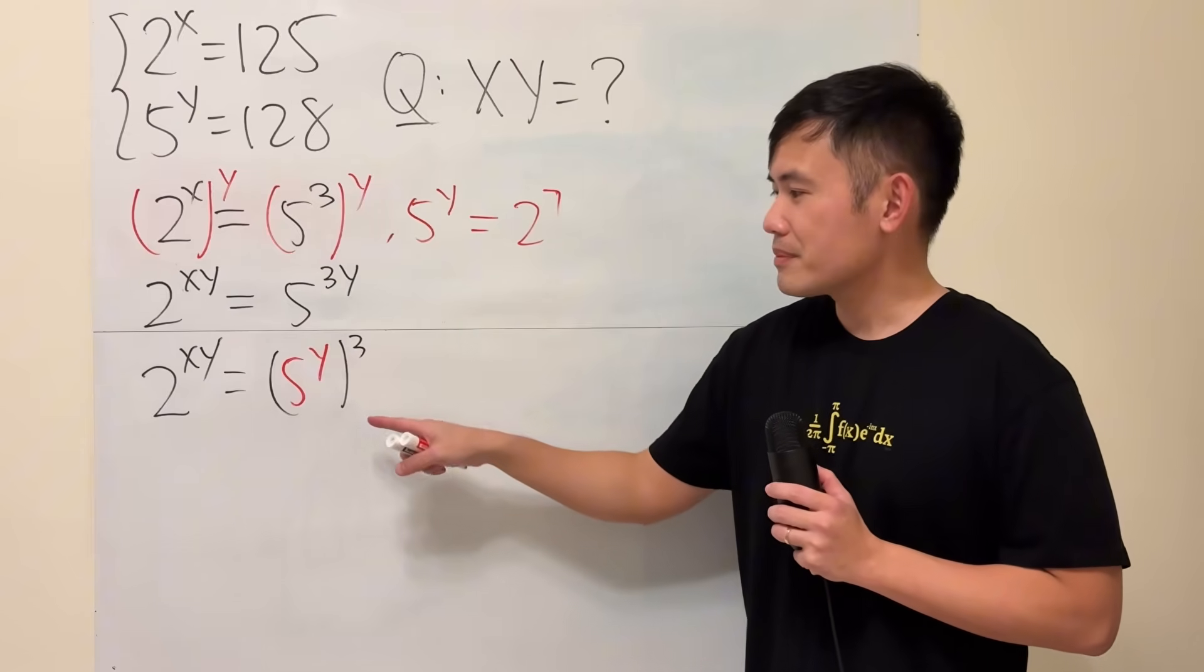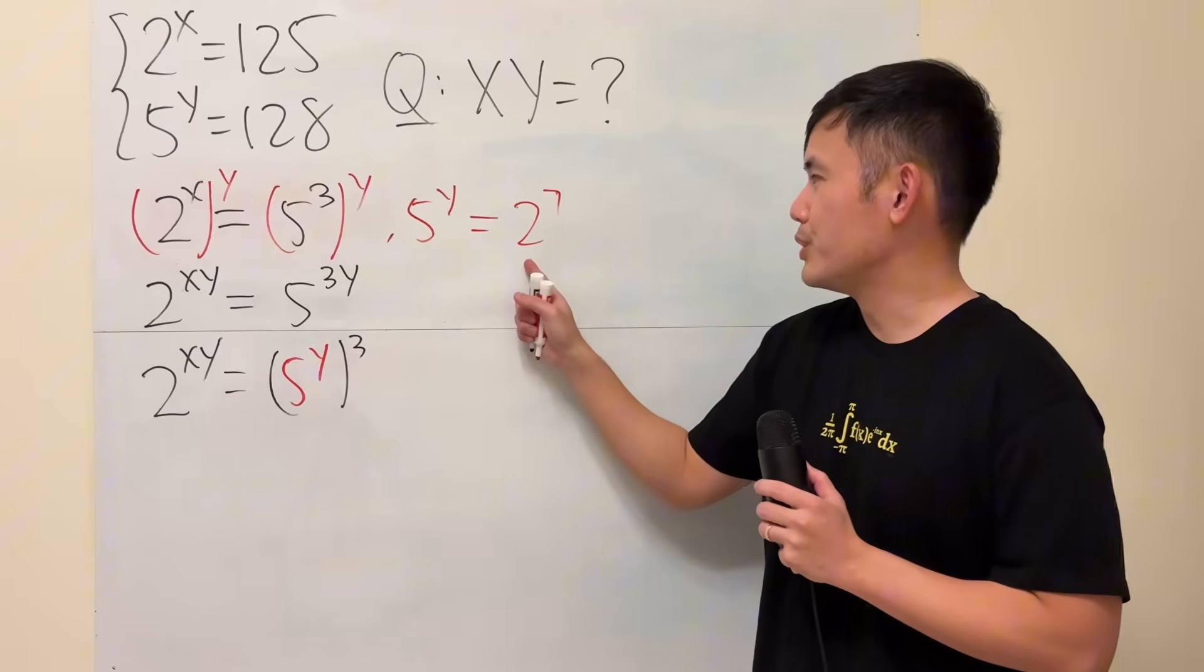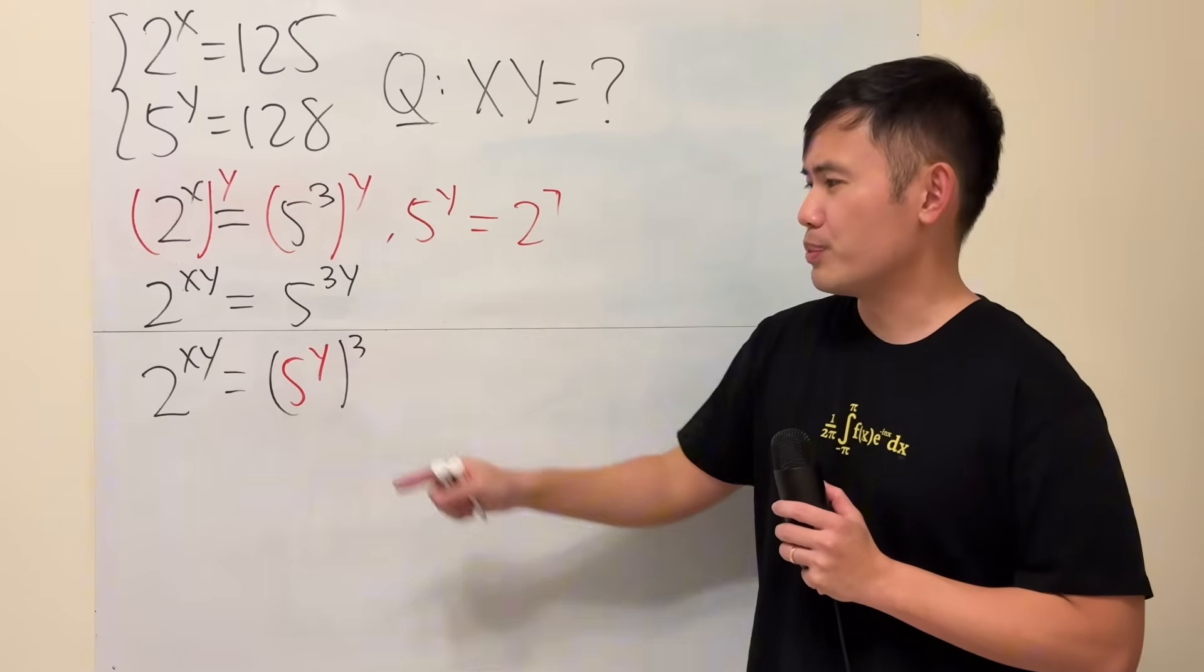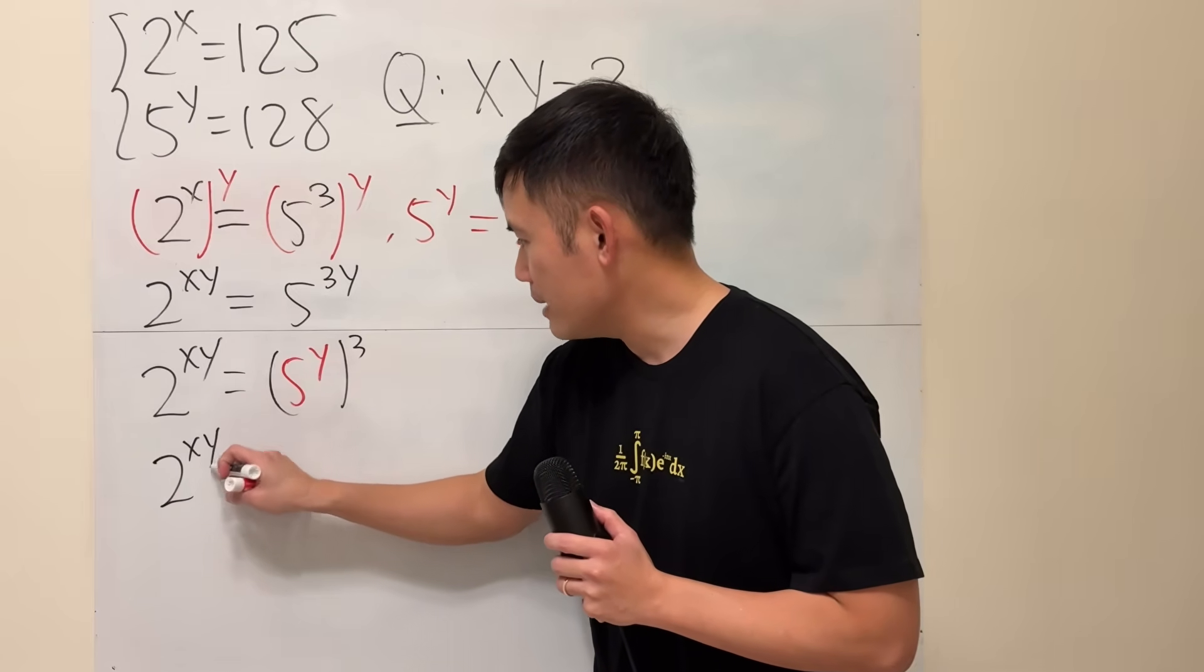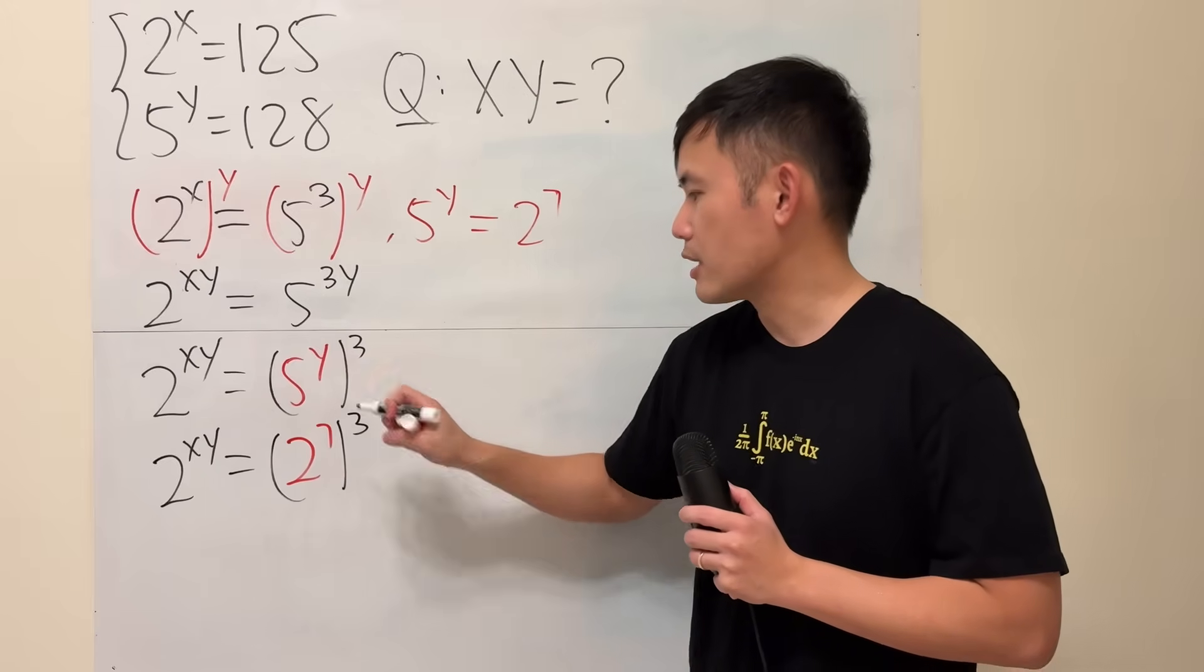Now, the question, the reason that we did this is because 5 to the y is what? 2 to the 7th power. We get to replace that. So we have 2 to the xy being 2 to the 7th raised to the 3rd power.